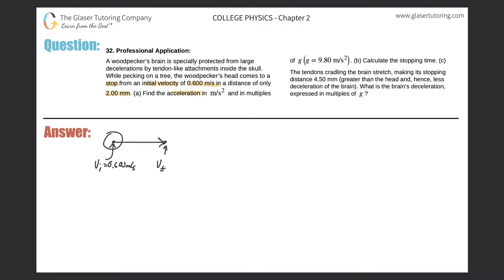It comes to a stop, so the final velocity is going to be 0 meters per second. And it goes from this velocity of 0.6 to 0 in a distance of 2 millimeters. So this distance here is going to be 2.00 millimeters. That would be my x value.